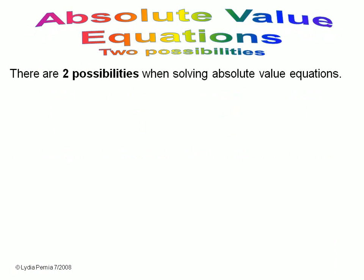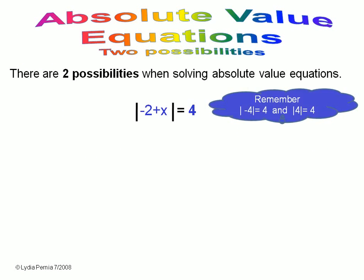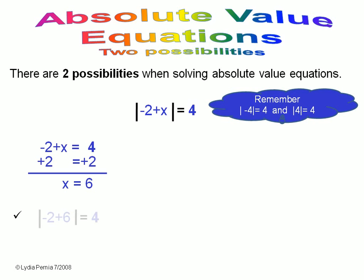When we work with absolute value equations, we have to keep in mind that there are always two possibilities. Remember that the absolute value of negative four is four, and the absolute value of four is four, so we have to set up two equations. For the first one, all we have to do is remove the absolute value bars and solve it like any other equation.